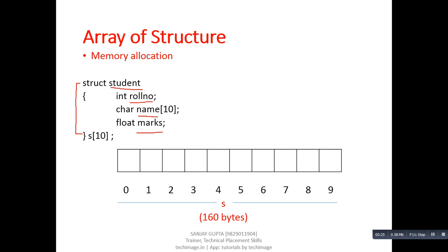The problem is we want to store the number, name, and marks of 10 students. So we have declared an array of structure named as 's', and the size of this array is 10. Here is the memory location of this array of structure, which contains a total of 10 blocks. Each block will be further divided into three parts.